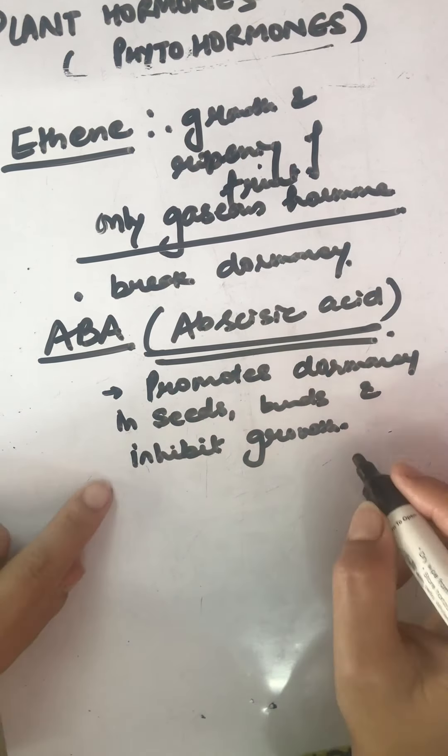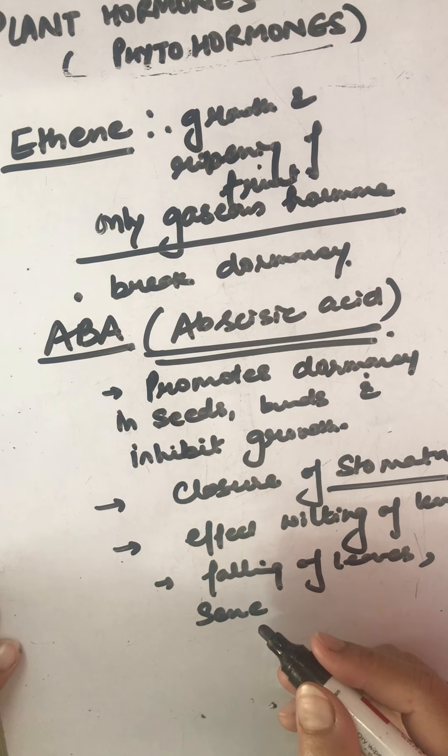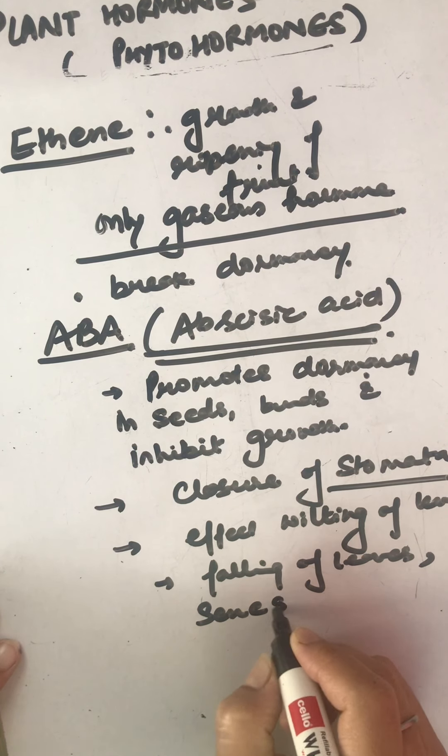ABA also affects wilting of leaves and promotes their falling. It promotes senescence — bringing old age in leaves and helping the plant move towards death. In contrast, cytokinin brings new growth, helps cells divide and grow. ABA promotes aging in the plant, while cytokinin promotes new life. This concludes the topic of plant hormones.